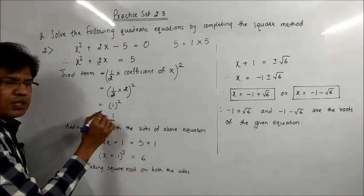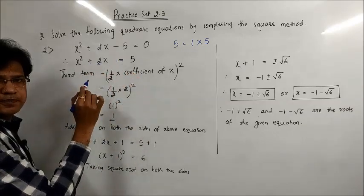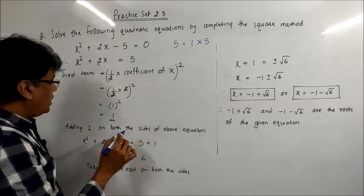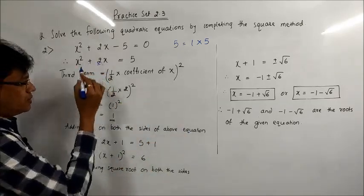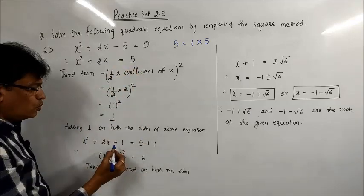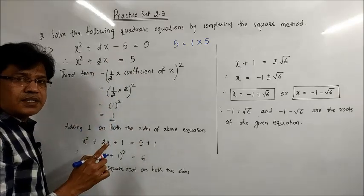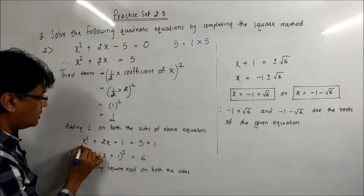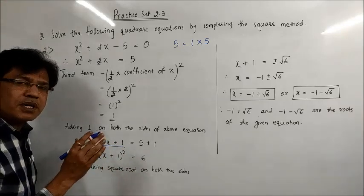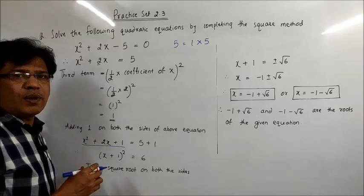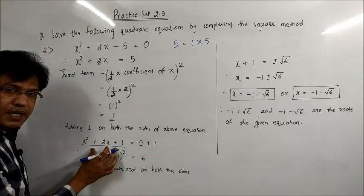The third term is to be added on both sides of the equation. So adding 1 on both sides, I get x² + 2x + 1 = 5 + 1. The left-hand side always becomes a complete square, and this is the reason why this method is known as the method of completing squares. So here we get a complete square.